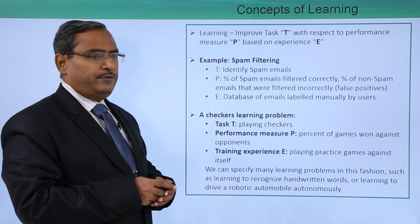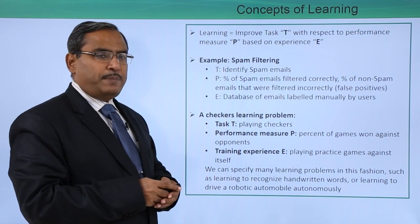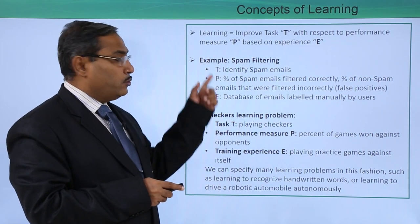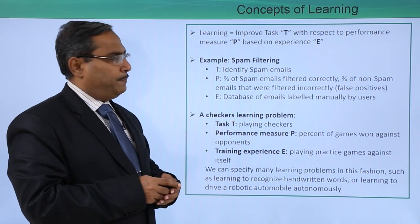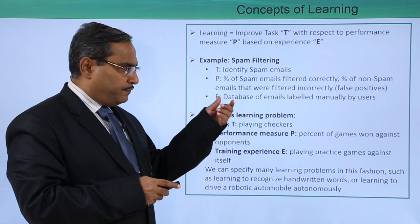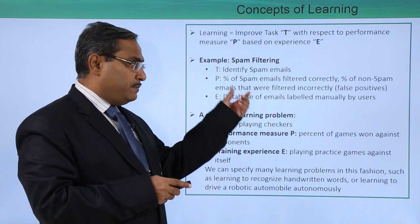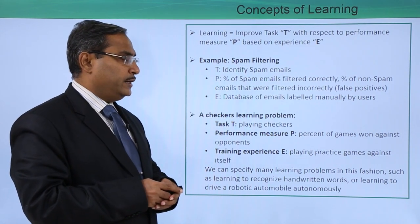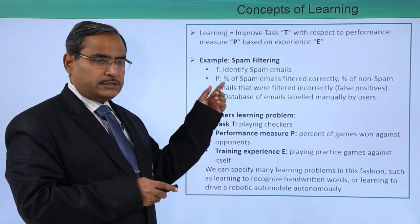As an example, if you go for spam filtering: T is the task — identify spam emails. P is the performance measure — percentage of spam emails filtered correctly, and percentage of non-spam emails that were filtered incorrectly, that is a false positive. That will decide the respective performance measure for this case study.